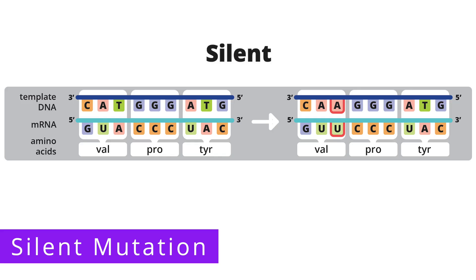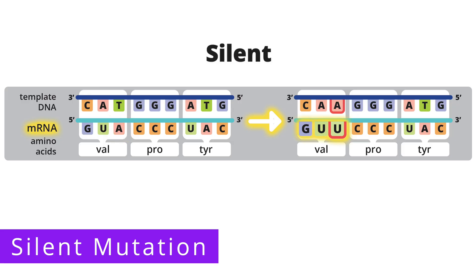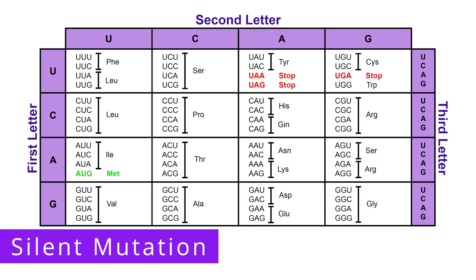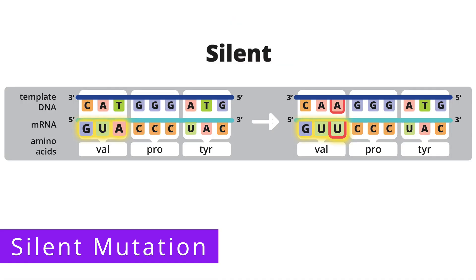Now, let's say that a mutation causes the third nucleotide, which was supposed to be thymine, to be replaced with adenine. With transcription, the third nucleotide in the mRNA strand then becomes uracil instead of adenine. So the first codon in the mRNA strand is now GUU as opposed to GUA. If we look up GUU in the genetic code chart, we see that it still codes for valine. So even though we had a mutation in the DNA, it did not alter the amino acid sequence, because the codons GUA and GUU both code for valine. So our amino acid sequence of valine, proline, and tyrosine remains unchanged.